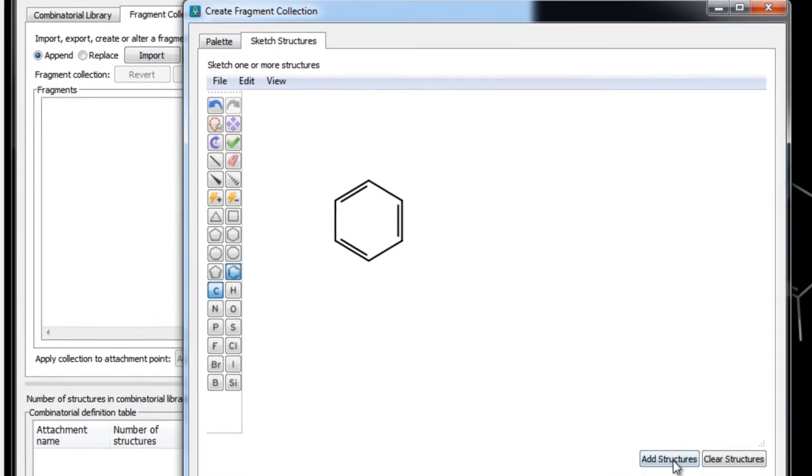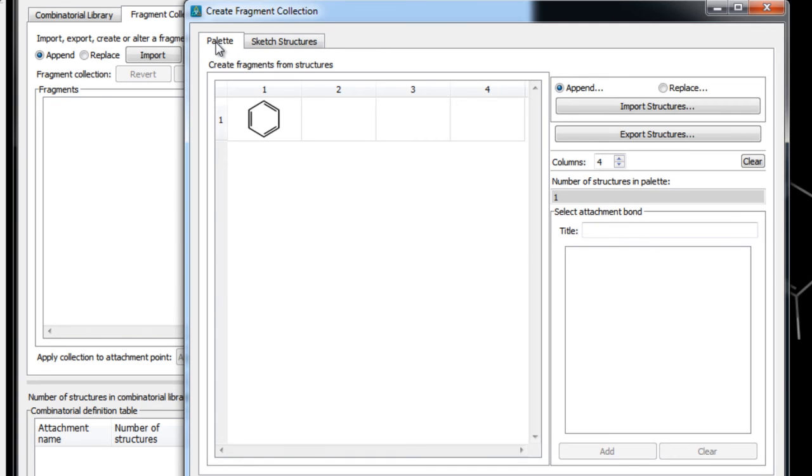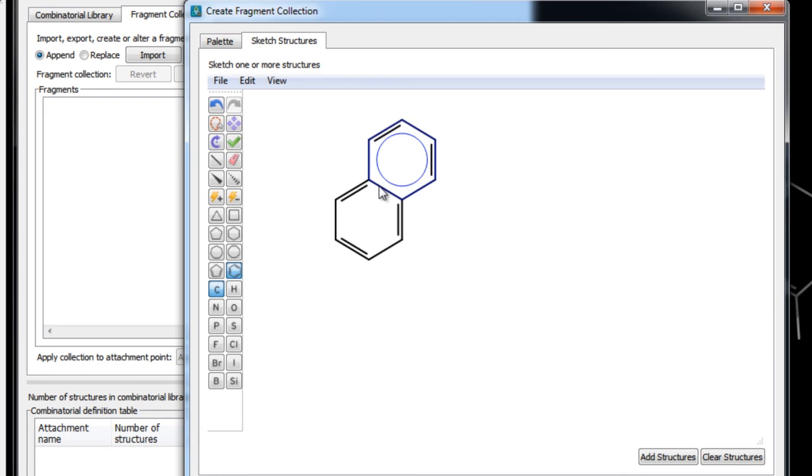Once sketched, click add structures. Back in the palette tab we can see it listed in the table. So by using the sketcher, we can very quickly add new structures to the palette table.